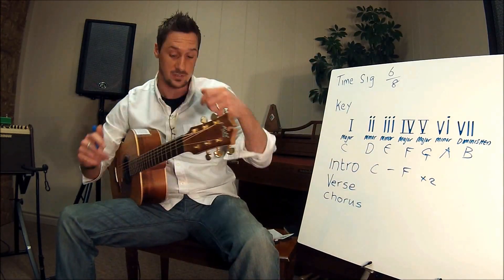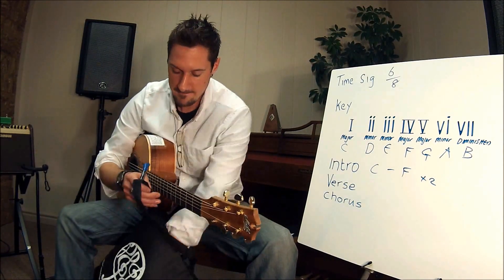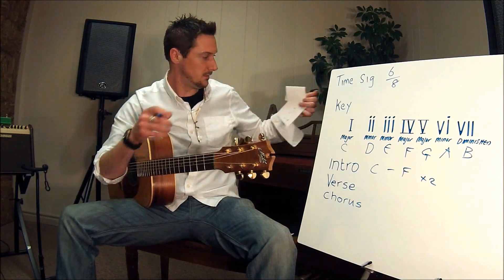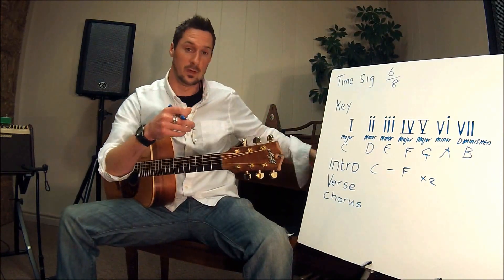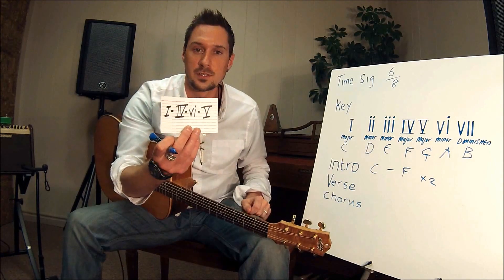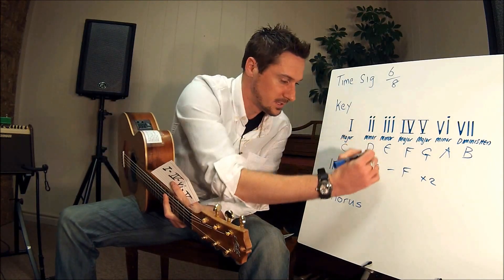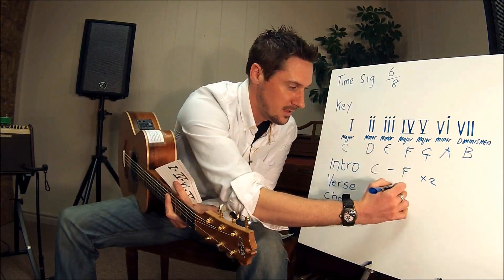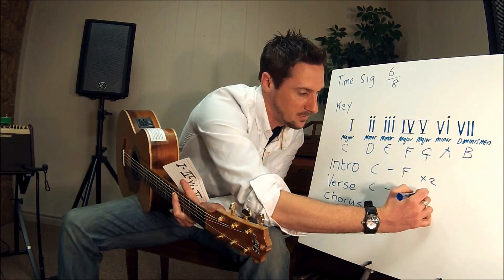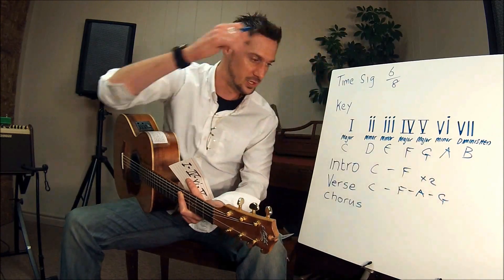Okay, then I need a verse. I'm going to pull out a verse from here. Here's one — which is a one, four, six, five. In the key of C, the one-four-six-five is going to be C, F — just like the intro — and then six is your A minor, and the five is the G chord.